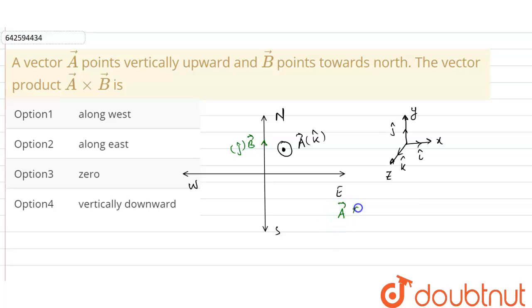Now in the given question, A vector cross B vector will be k cap cross j cap. As we know that k cross j is minus i cap. So minus i cap will be represented towards west.